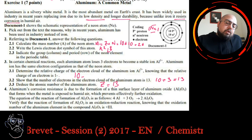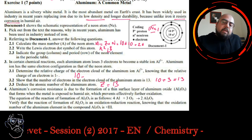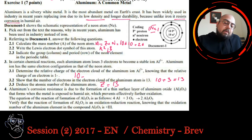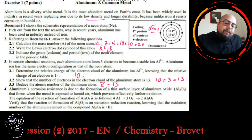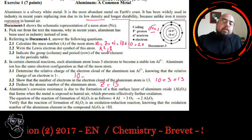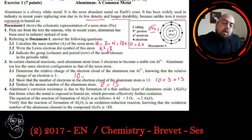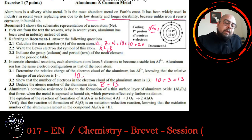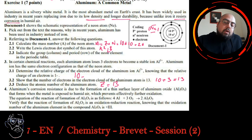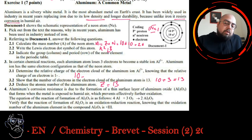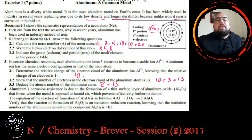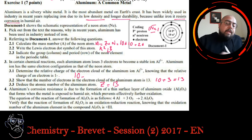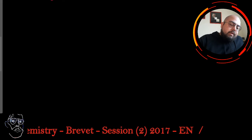Aluminum's corrosion resistance is due to the formation of a thin surface layer of aluminum oxide, Al2O3, that forms when the metal is exposed to humid air, which prevents effectively further oxidation. The equation of the reaction of formation Al2O3 is as follows: 4Al plus 3O2 gives you 2Al2O3. Verify that the reaction of formation Al2O3 is an oxidation reduction reaction, knowing that the oxidation number of aluminum element in Al2O3 is plus 3. We have to get back to this reaction. We're going to write down the reaction again.